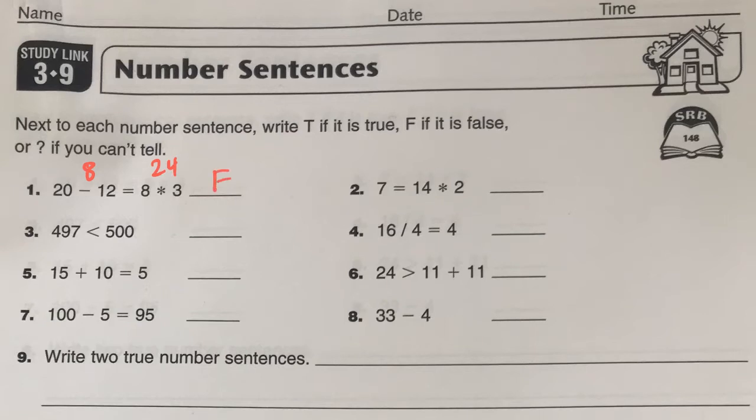Moving on to the next one, we have 7 is equal to 14 times 2. Well, 14 times 2 would be 28. And again, 7 is not equal to 28, so that is also false.